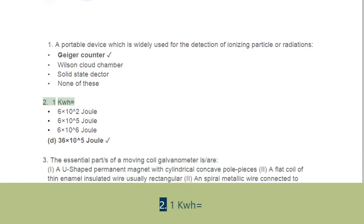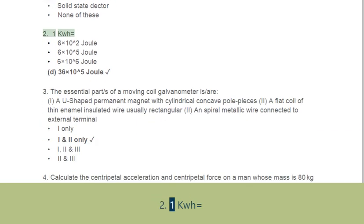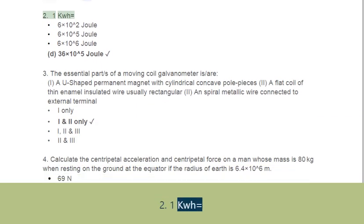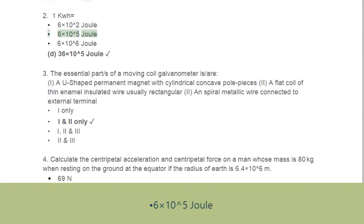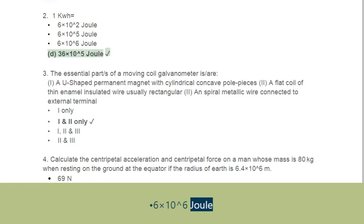Question 2: 1 kWh equals. Options: A. 6×10² joule, B. 6×10⁵ joule, C. 6×10⁶ joule, D. 36×10⁵ joule.